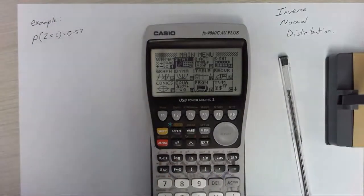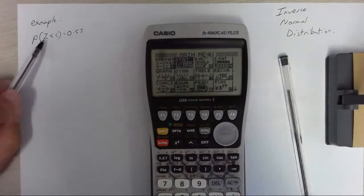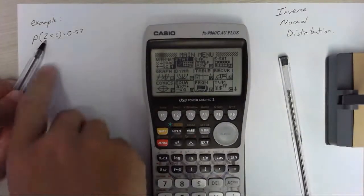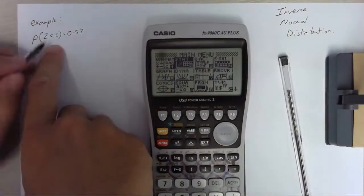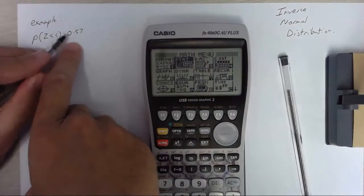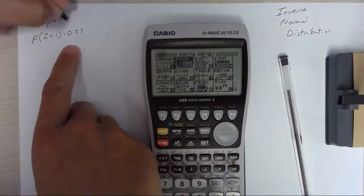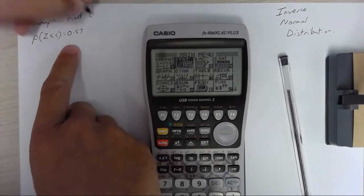So it's kind of the reverse of everything we've been doing in the past. This says the probability that z is less than c is equal to 0.57, which means we're dealing with a standard normal distribution, and the question is find c.